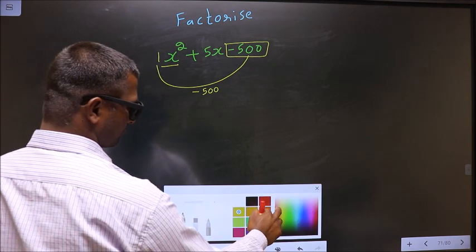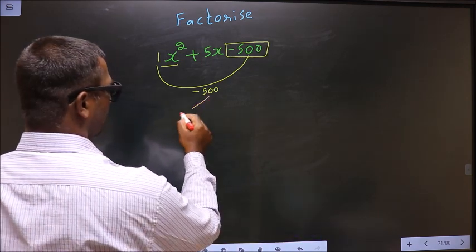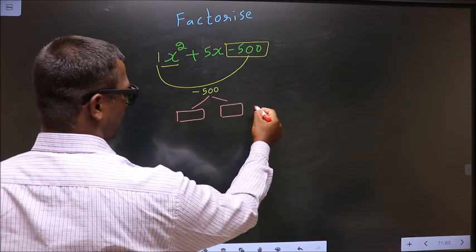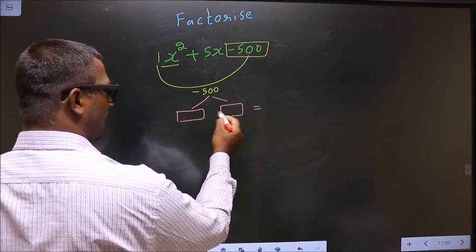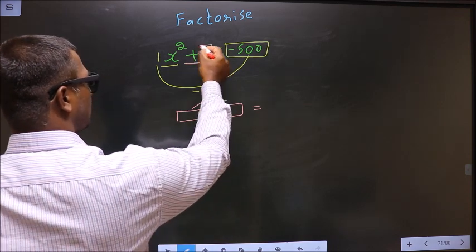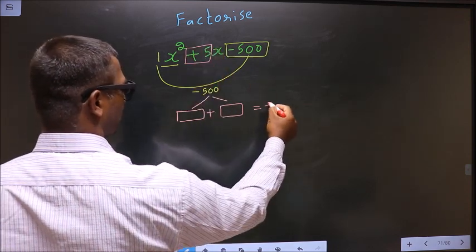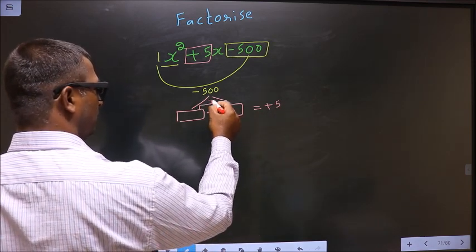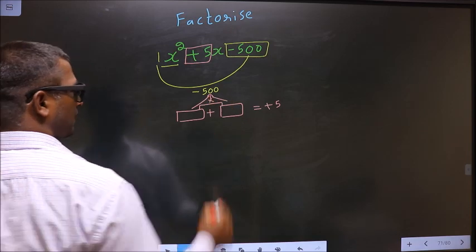Now you should look out for 2 numbers such that when you add these 2 numbers you should get the middle coefficient, that is plus 5, and also when you multiply these 2 you should get minus 500.